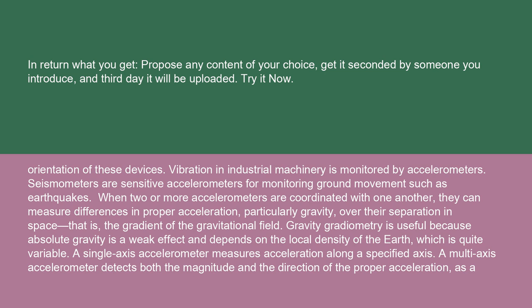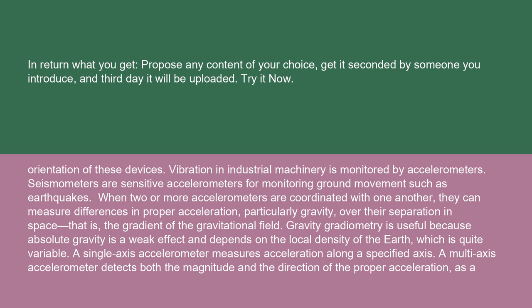When two or more accelerometers are coordinated with one another, they can measure differences in proper acceleration, particularly gravity, over their separation in space — that is, the gradient of the gravitational field. Gravity gradiometry is useful because absolute gravity is a weak effect and depends on the local density of the Earth. A single-axis accelerometer measures acceleration along a specified axis. A multi-axis accelerometer detects both the magnitude and direction of proper acceleration as a vector quantity and is usually implemented as several single-axis accelerometers oriented along different axes.